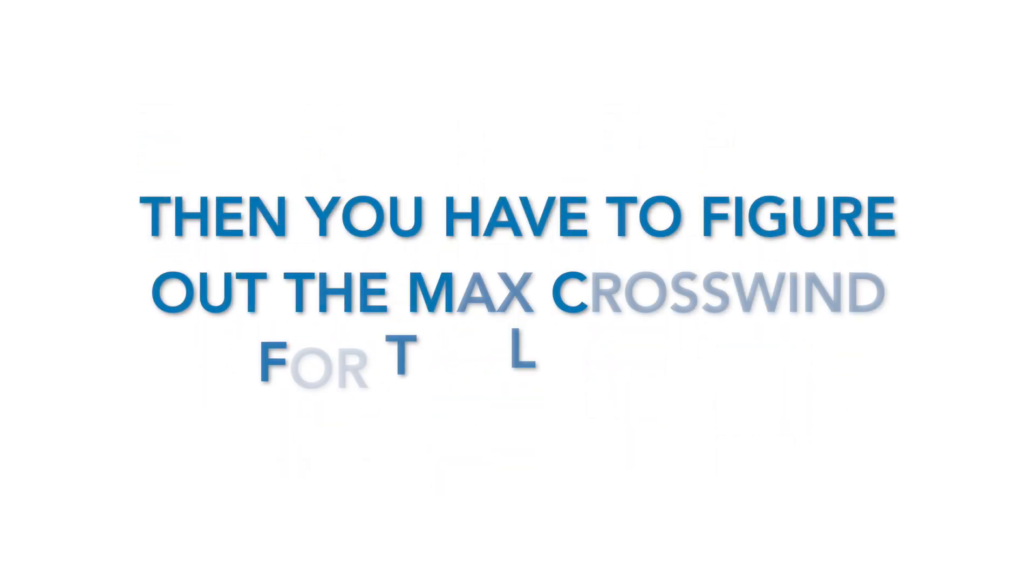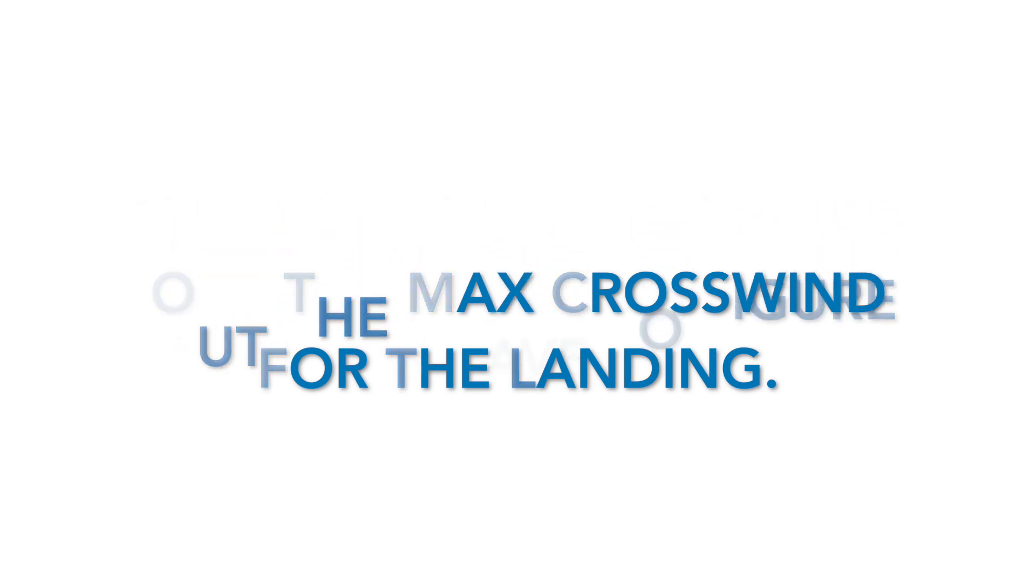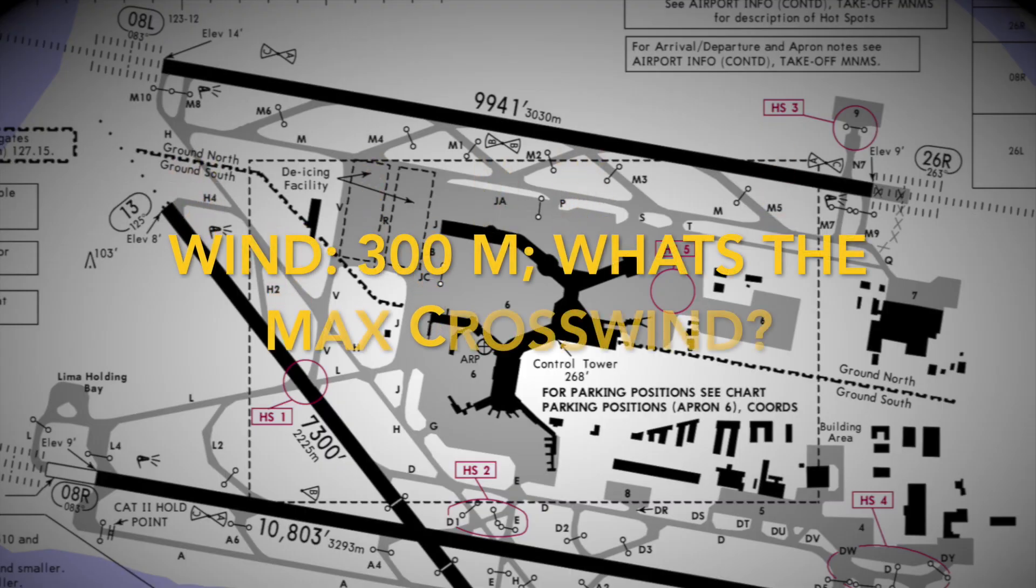Based on the CRFI you kind of have to work backwards and this is very common on some of the exams as well. So let's say for example we're still landing on runway 26 right in Vancouver, but this time the winds are 300 degrees and we have to determine what's the maximum wind we can take, especially crosswind.